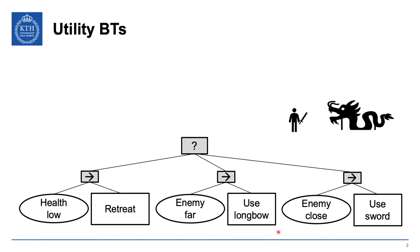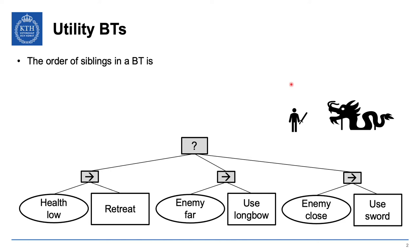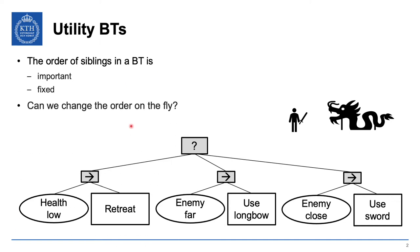To see why we need utility behavior trees, we'll look at a simple example: a warrior fighting a dragon. We have a simple behavior tree — if health is low, retreat; if the enemy is far away, use a longbow; if the enemy is close, use a sword. One key observation about behavior trees is that the order of siblings is important and it's also static — fixed.